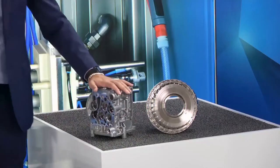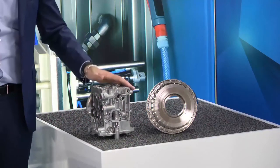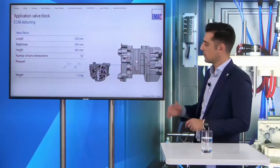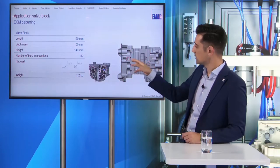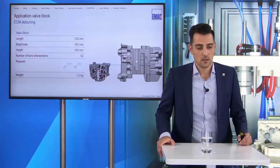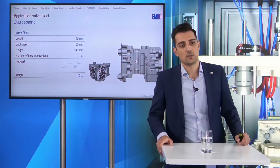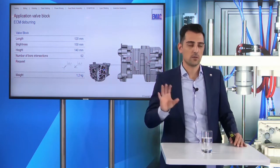The valve block I have here next to me on the table. It is a metallic part approximately 120 mm in length, 100 mm in width, 140 mm in height, with several intersections. In a cross-sectional view through the part, you can count approximately 10 intersections where ECM deburring is needed. The required break edge is up to 0.3 mm and the weight is approximately 1.2 kilograms. When you think about manual deburring through these holes, there are some limits — and for that I want to show you our solution.